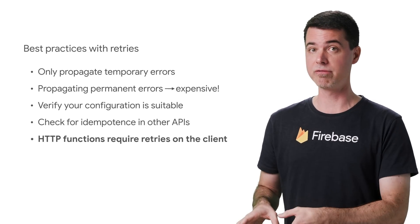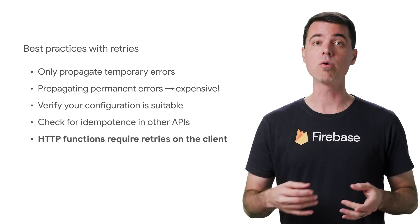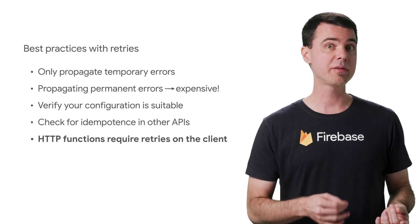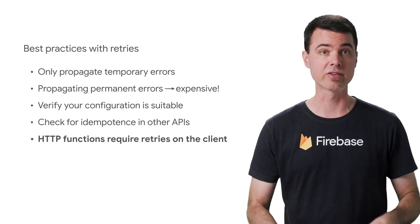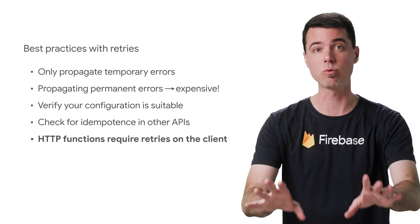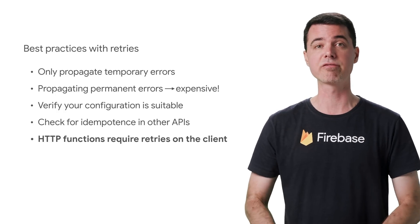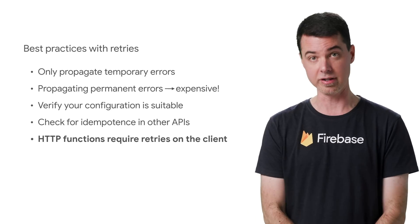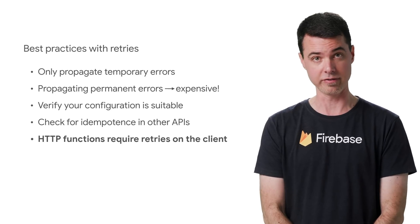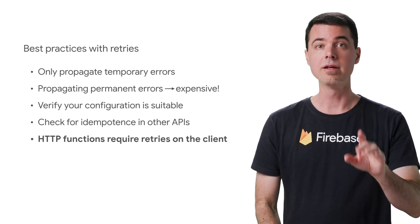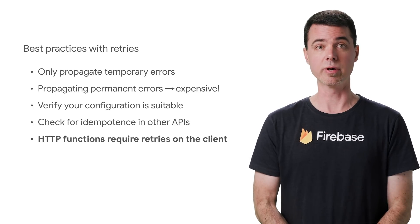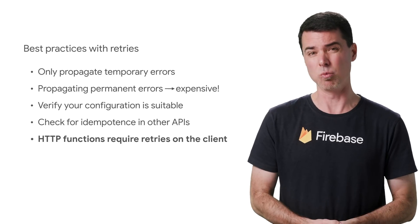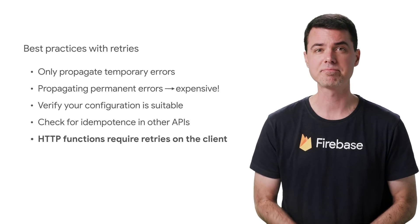HTTP and callable functions don't have retries. If an HTTP function fails, the client will have to detect that from the response and retry the request itself if it wants. Dealing with duplicate HTTP requests from clients is also something you may need to work out for yourself.